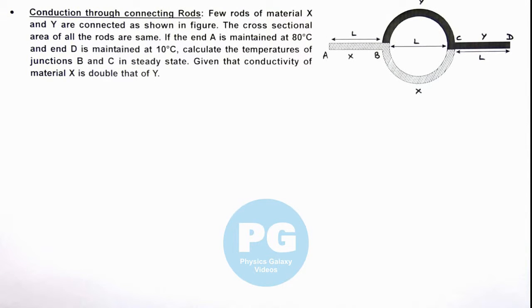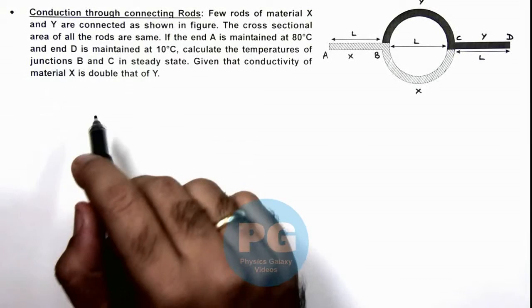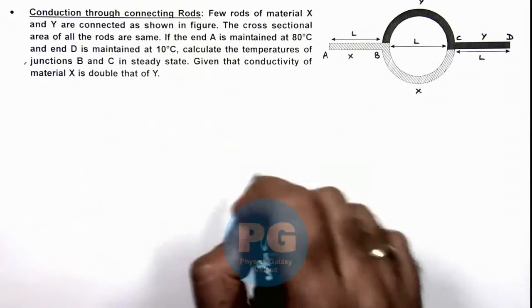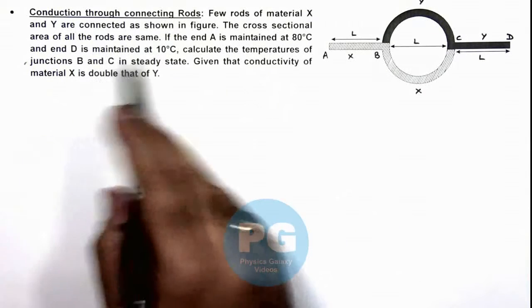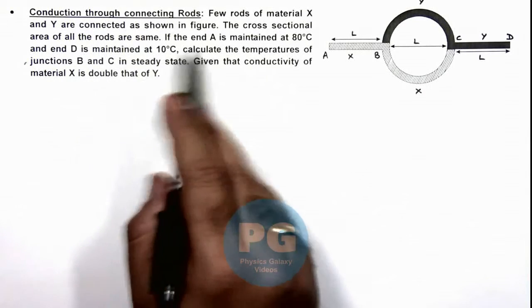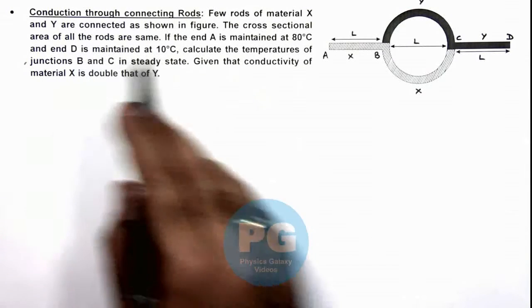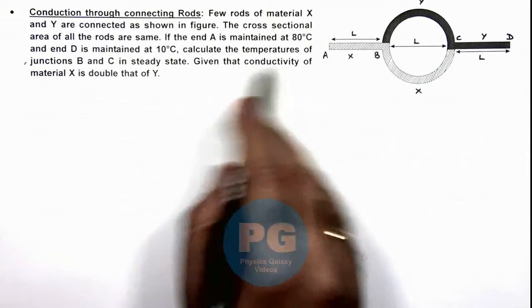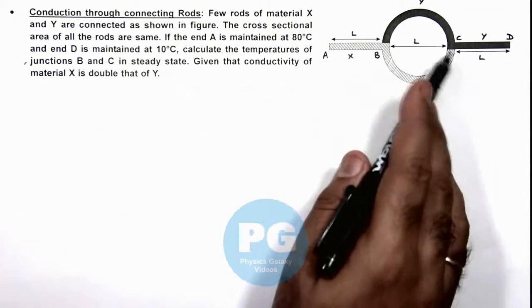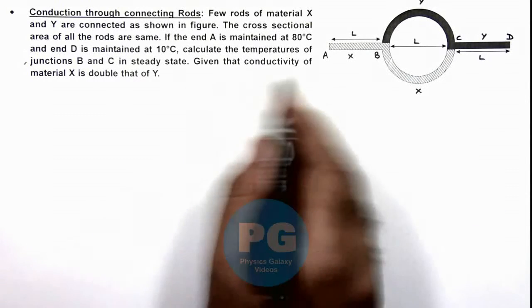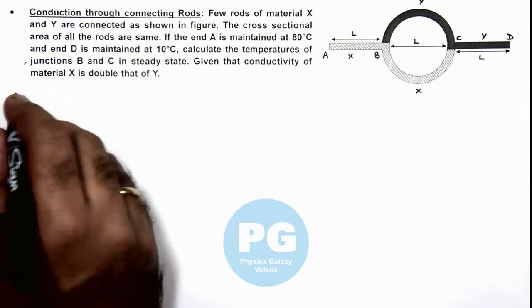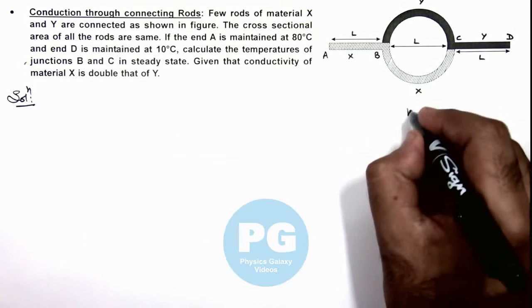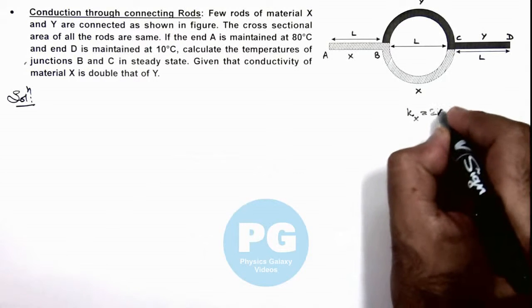In this illustration we'll analyze the conduction through connecting rods. We are given that few rods of material X and Y are connected as shown in figure, and the cross sectional area of all the rods are same. End A is maintained at 80 degrees and end D is maintained at 10 degrees centigrade. We are required to calculate the temperatures of junction B and C in steady state. We are also provided that the conductivity of material X is double that of Y, that means kx is equal to twice of ky.